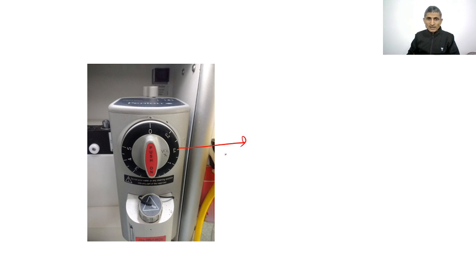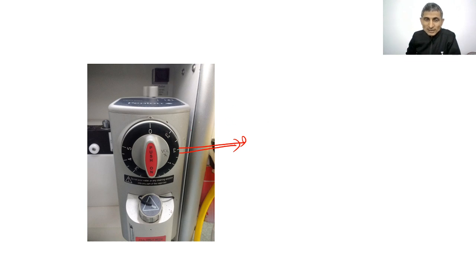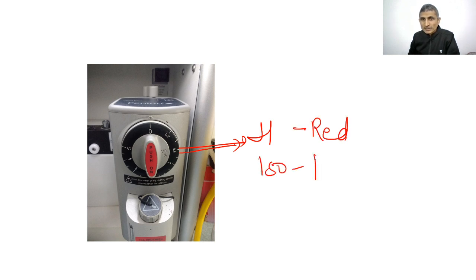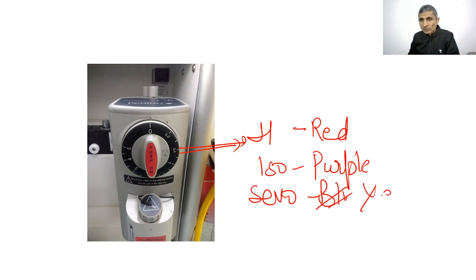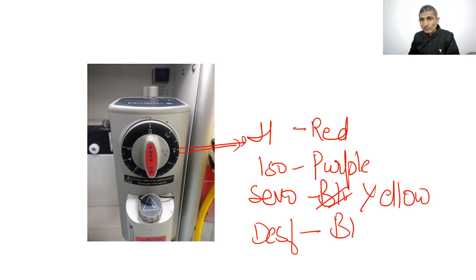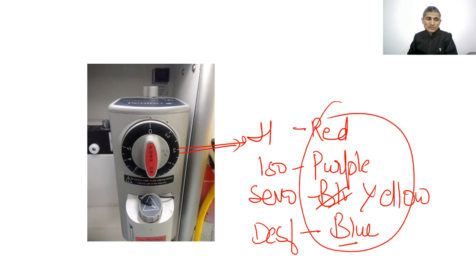The examiner may show the color of the vaporizer and ask which inhalation agent it is for. Color coding: red for halothane, purple for isoflurane, yellow for sevoflurane, and blue for desflurane. So a red vaporizer is for halothane.